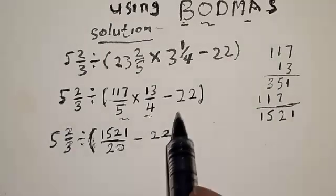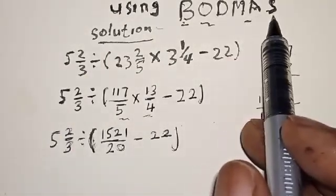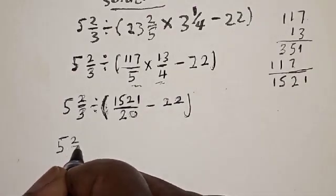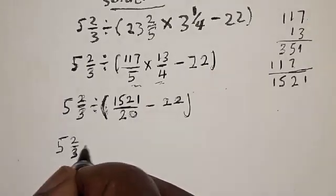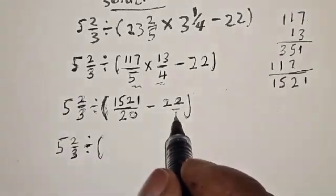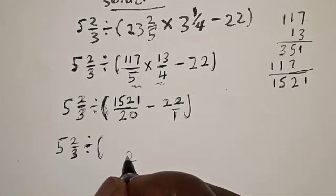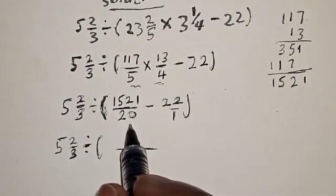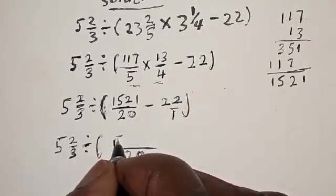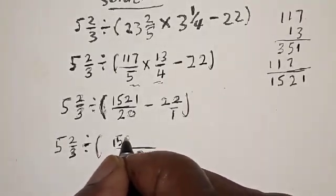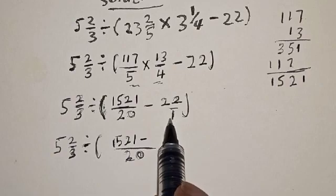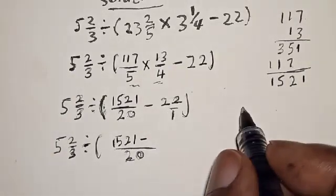We are still working with the bracket. What's left in the bracket is subtraction — there's no addition but we have subtraction. So this gives us 5 and 2/3 divided by: 1521 over 20 minus 22. Now 22 is the same as 22 over 1. The LCM of 20 and 1 is 20. So: 1 times 1521 = 1521, minus 20 times 22.